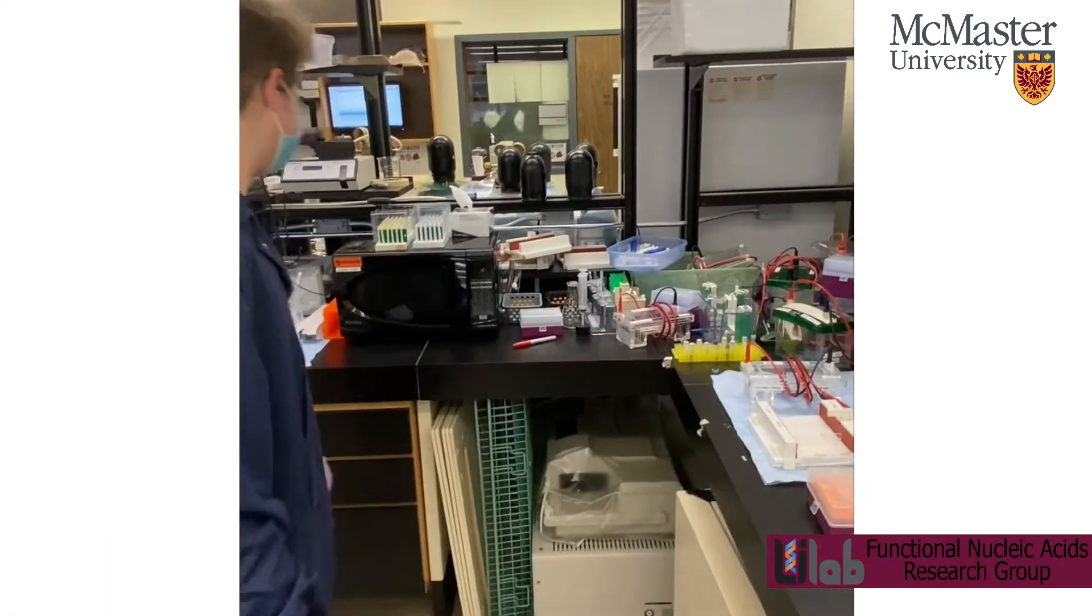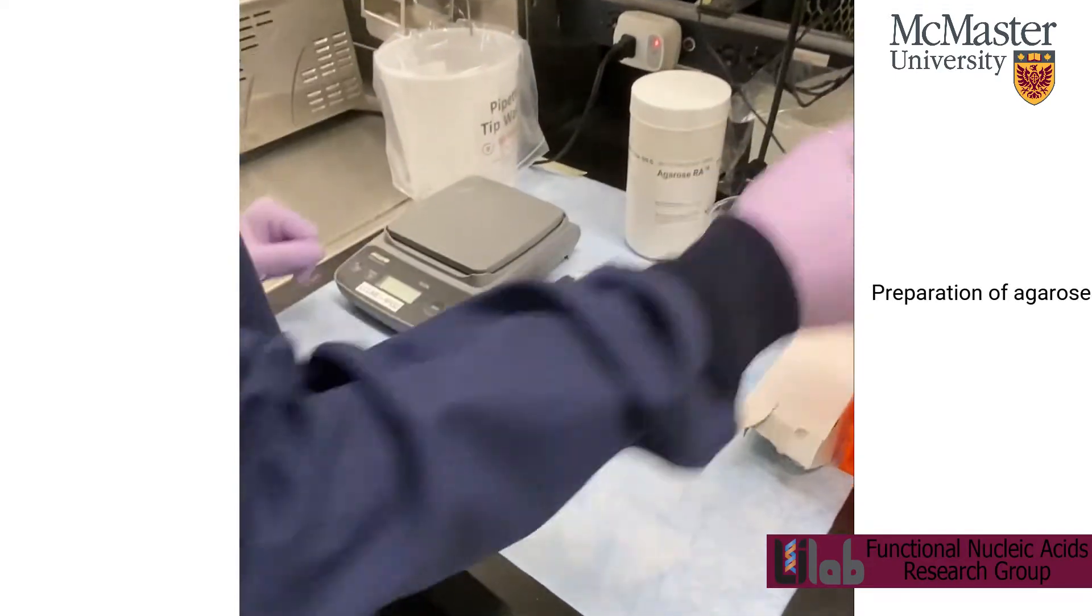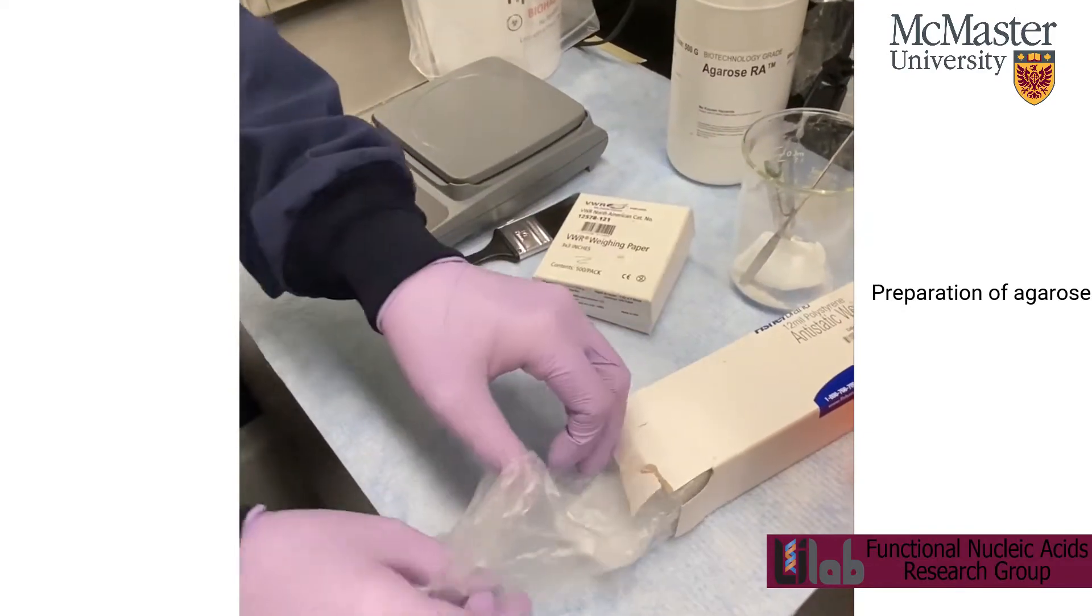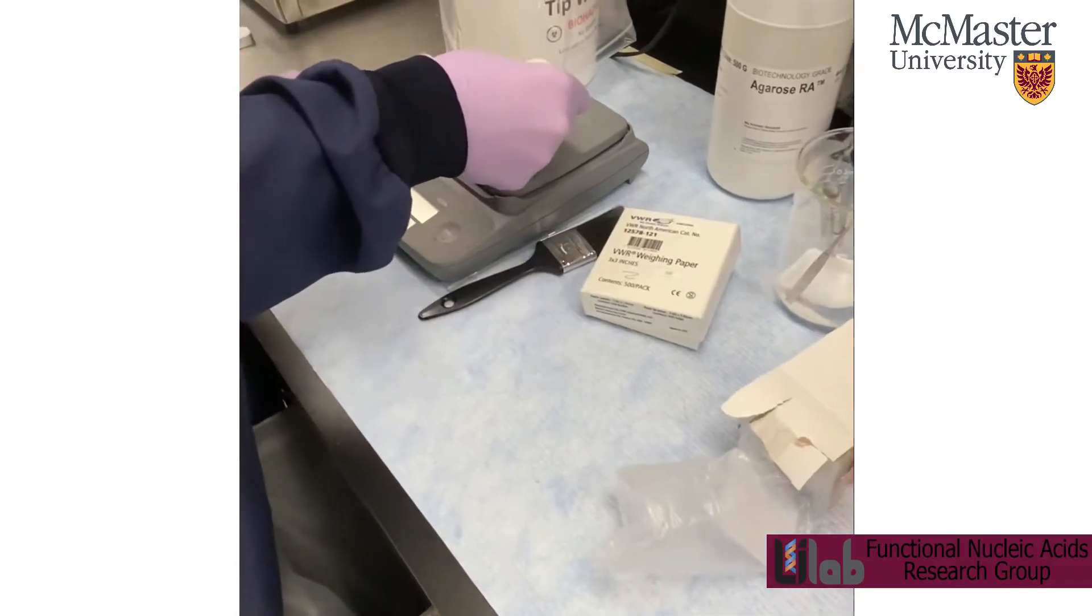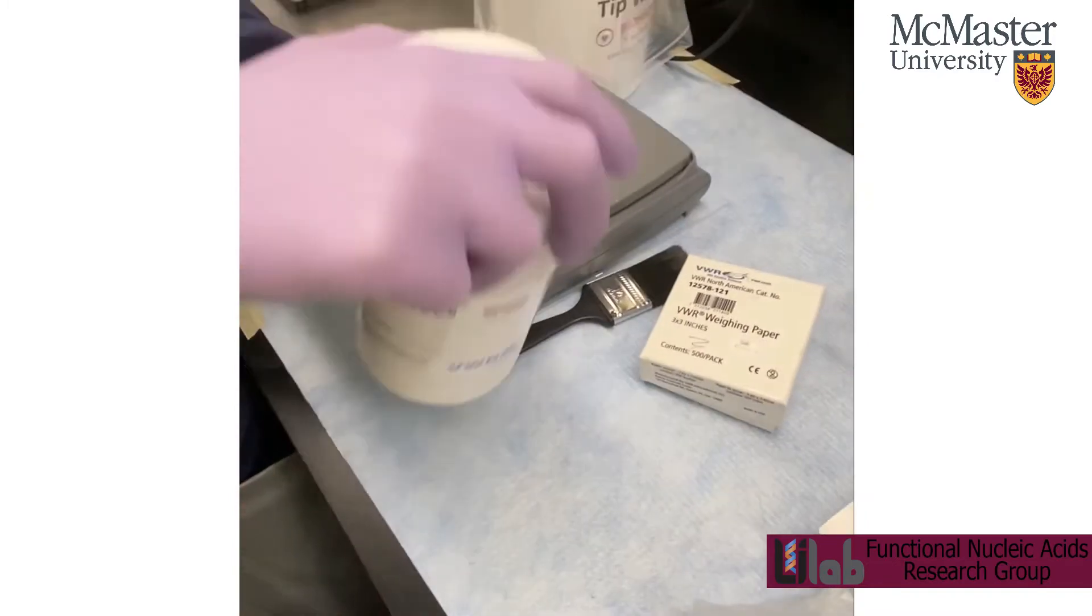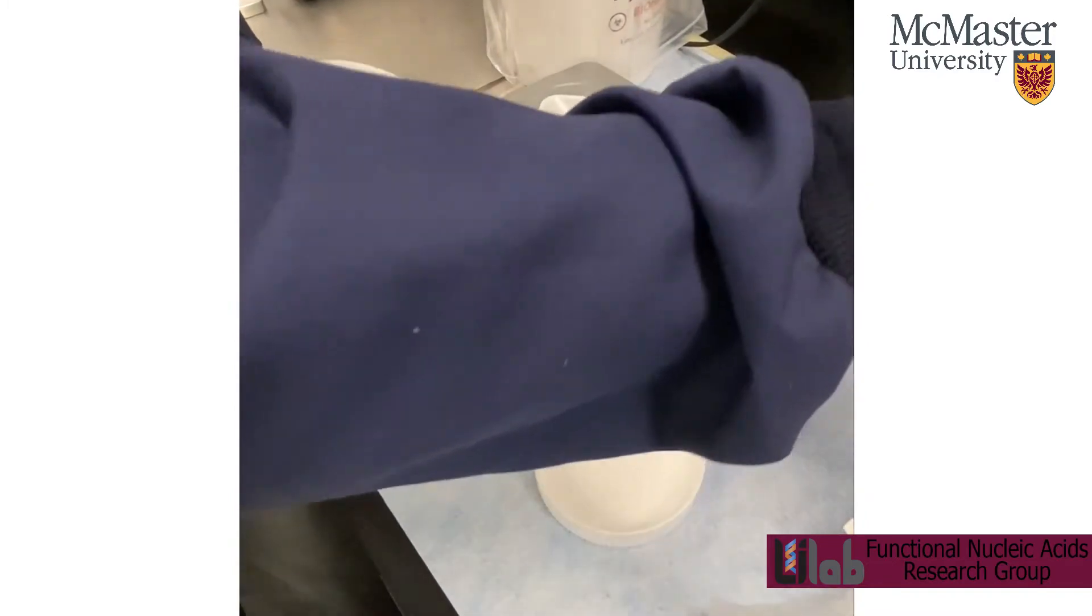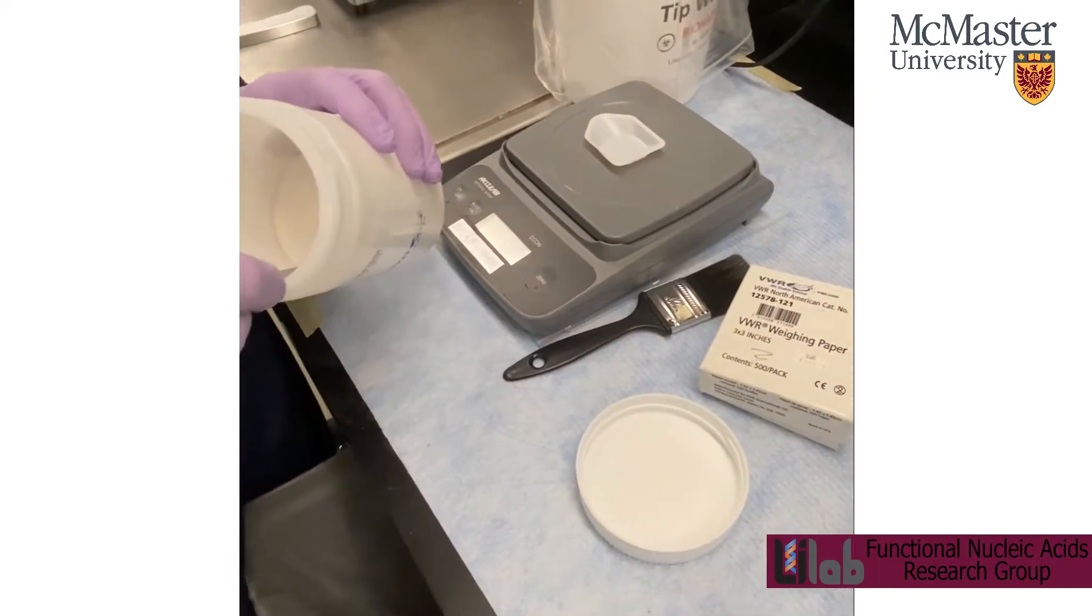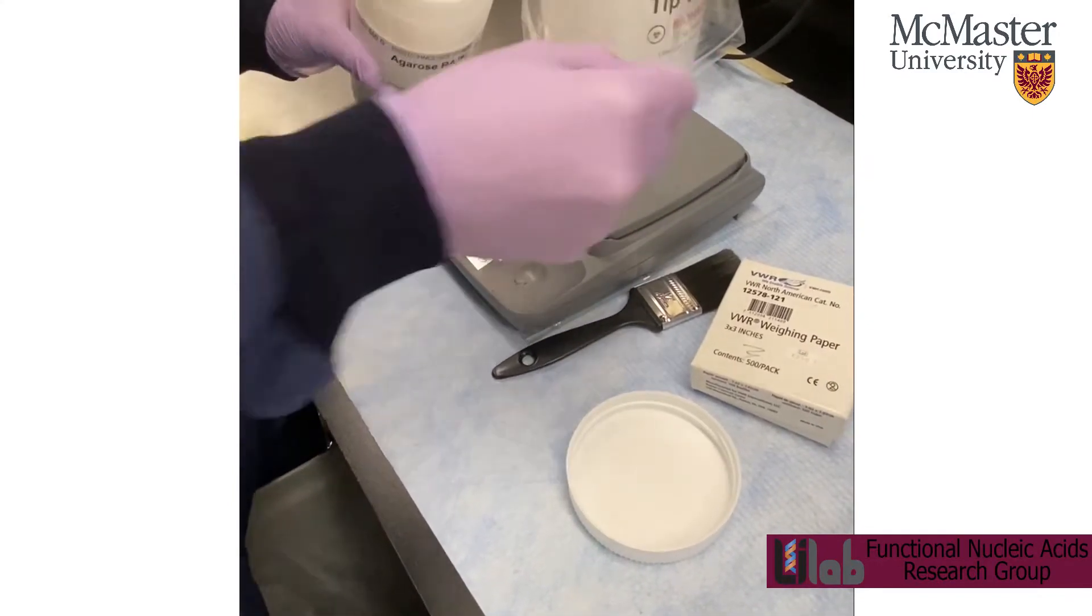So to start you first need to weigh out your desired percentage of agarose. The weighing dishes are in this box here, or the bigger ones are there. So turn it on first. You can start weighing your agarose. Calculate beforehand how much agarose you'll need, and it all depends on what percentage gel that you want to make.